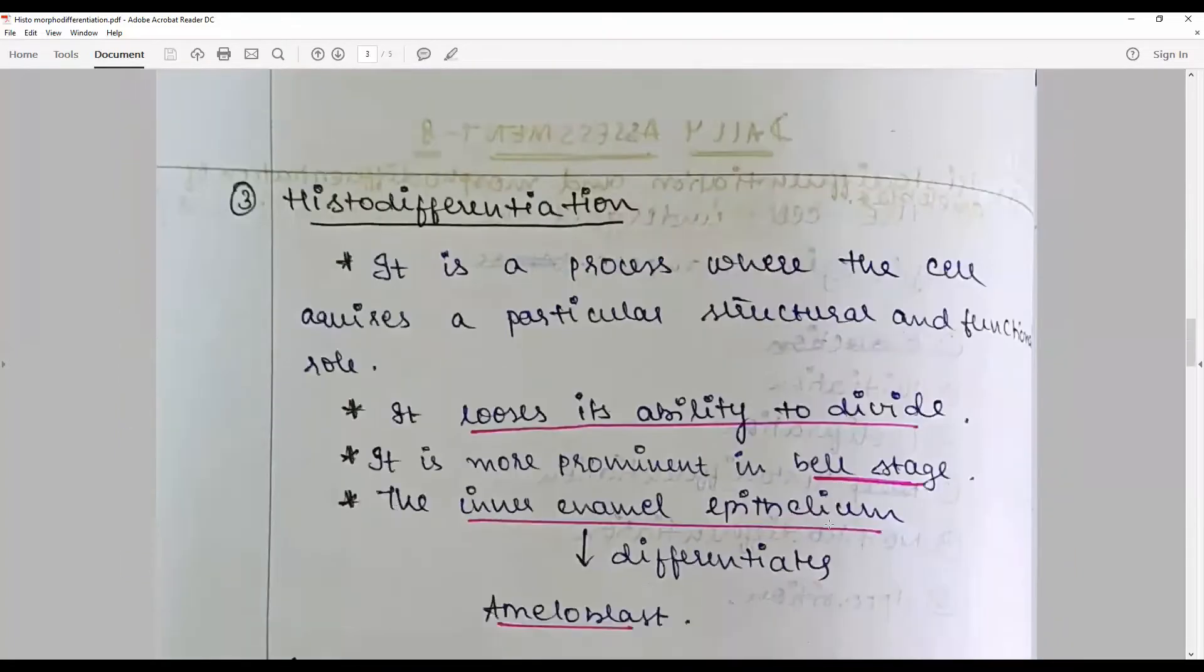Next is histo-differentiation, which is a process where the cell acquires a particular structural and functional role. It metamorphoses, loses its ability to divide, and becomes more prominent. The bell stage is the appropriate stage.